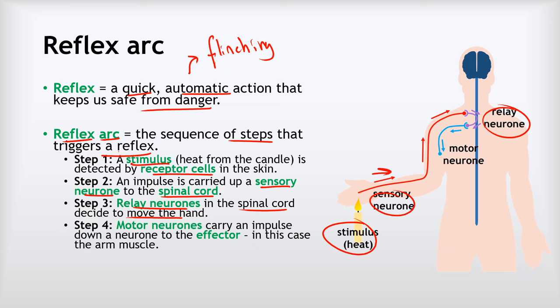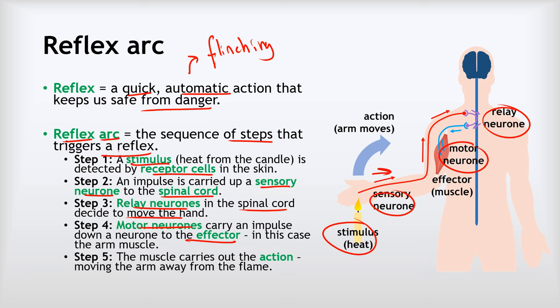Those relay neurons then pass an impulse to the motor neurons, which carry an impulse down to the effector — in this case an arm muscle. The action is then carried out: the hand moves up and away from the flame, keeping us safe. This is a quick, automatic action that we don't need conscious thought for, because conscious thought would slow us down and put us in danger for longer.